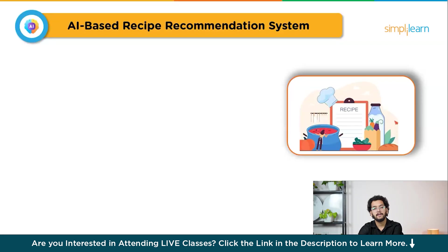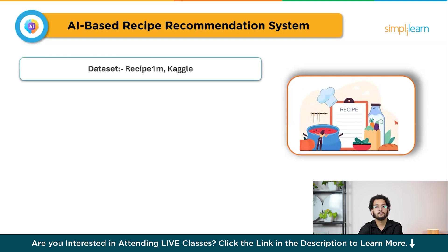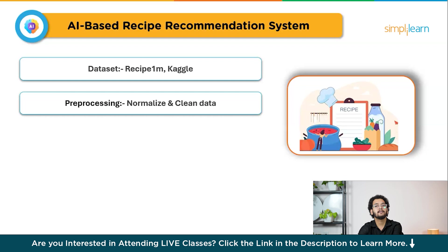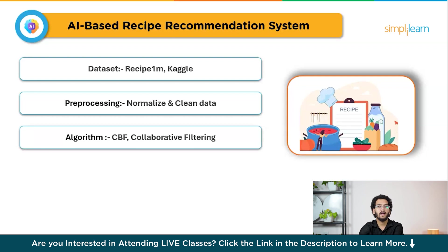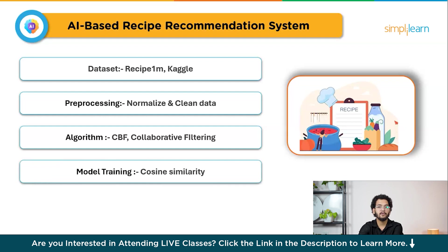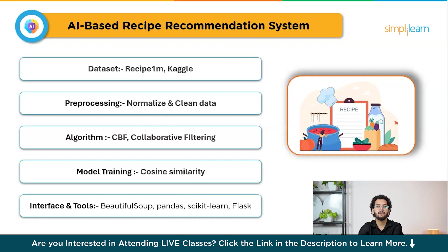To build this: Step 1 is data collection — use web scraping tools like Beautiful Soup to scrape recipes from websites, or use datasets like Recipe1M. Step 2 is preprocessing — normalize and clean ingredient data by standardizing ingredient names and handling missing values. Step 3 is recommendation algorithms — implement content-based filtering, which matches ingredient lists, and collaborative filtering, which uses user preference models. Step 4 is model training — use cosine similarity to match user-provided ingredients with recipe ingredients in the dataset. Step 5 is interface — create a simple web interface using Flask where users can input ingredients and receive recipe recommendations. Tools: Beautiful Soup, pandas, scikit-learn, Flask. Skills gained: web scraping, data cleaning, and recommendation systems.